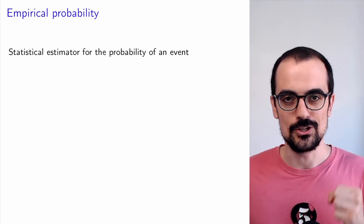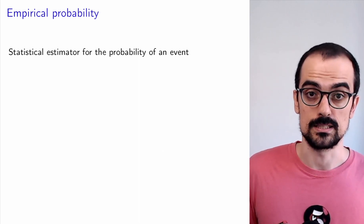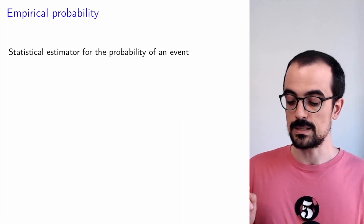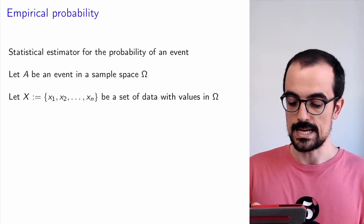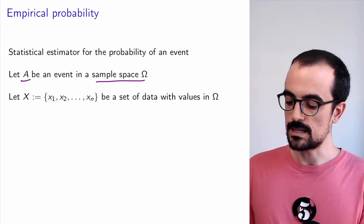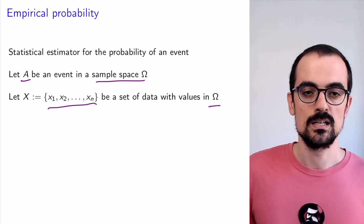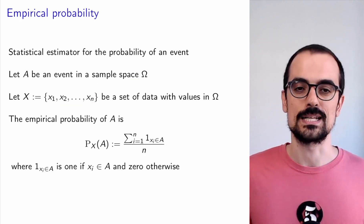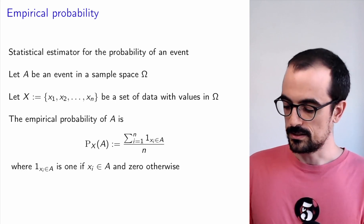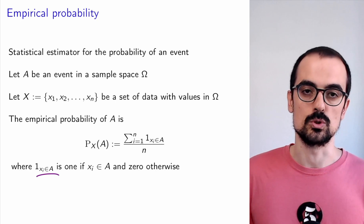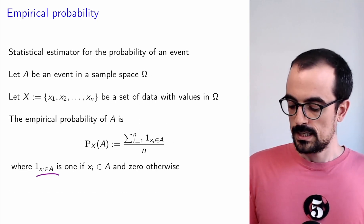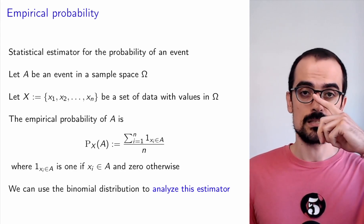Now let's use the binomial distribution to study the empirical probability estimator. To be clear, the empirical probability estimator has nothing inherently to do with binomial distributions — it's just an estimator for the probability of an event. We have an event A in a sample space, and we estimate its probability from data by looking at the fraction of data points that end up in A. This is a simple but very powerful estimator, using an indicator function equal to 1 if the data point is in A and 0 otherwise.